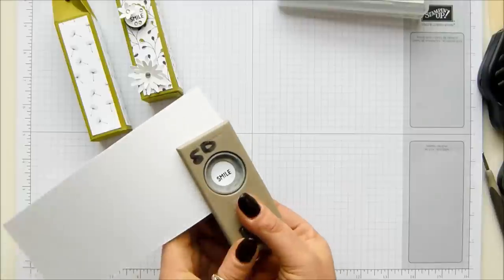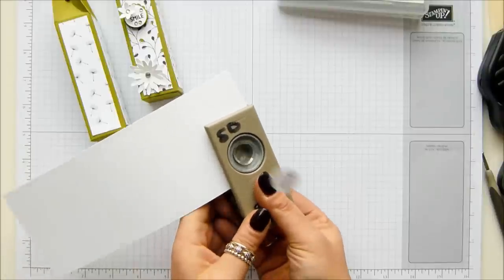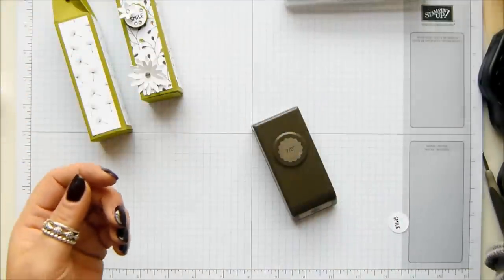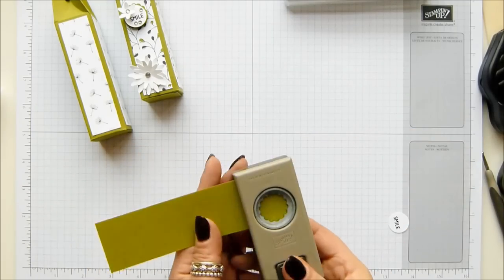There we go, easy. I'm going to punch that one with my three-quarter inch circle punch. I want to push it so it's a bit more towards the bottom so I can stick my flower above it.